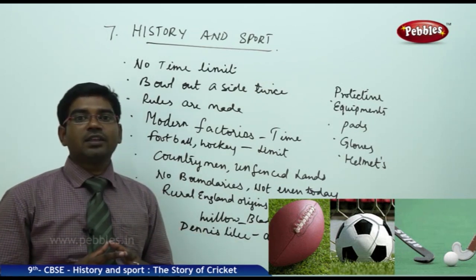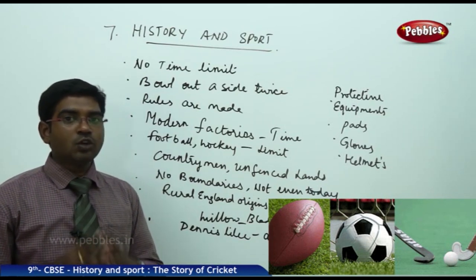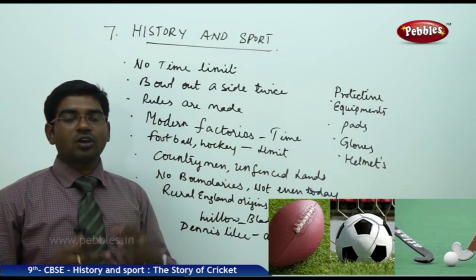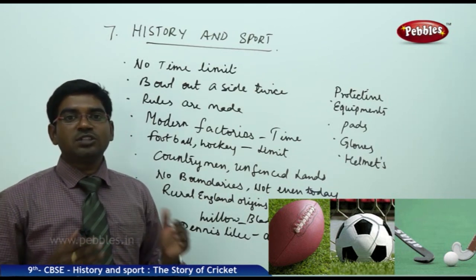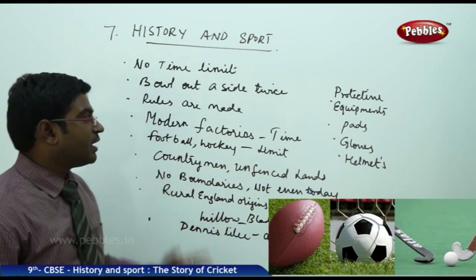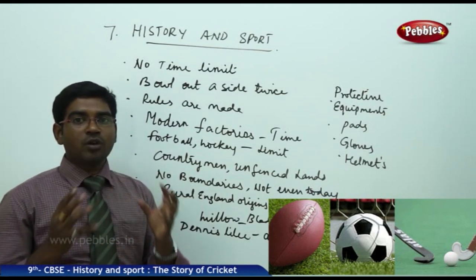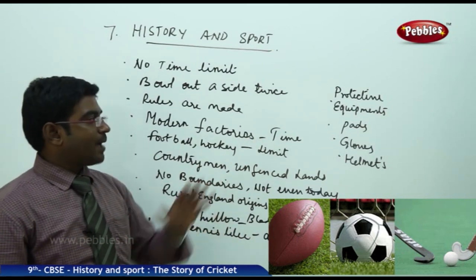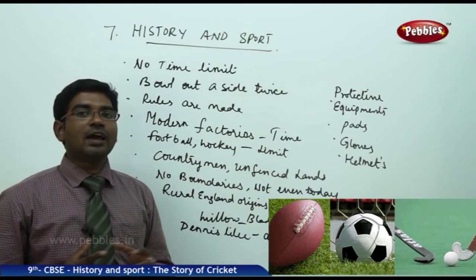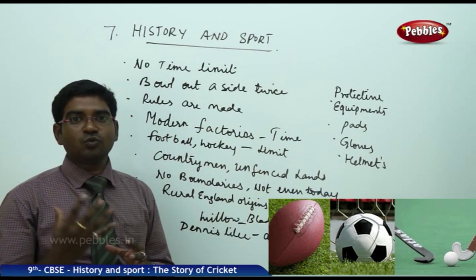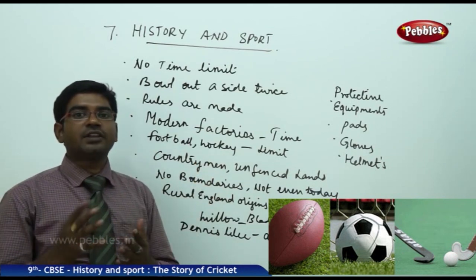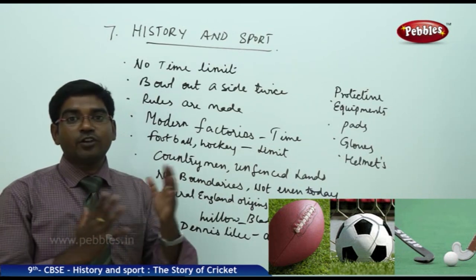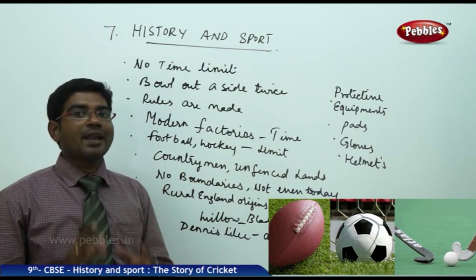Dennis Lillee, the Australian cricketer, once tried to bat with an aluminium bat for an entire innings, just to prove that with modern industrial products one could also play the game. However, the experiment showed it simply did not work. Regarding protective equipment, technology has given advancements in pads filled with wool, soft gloves, fine clothing, and lightweight metal helmets — but these additions apply only to protective equipment, not to the main elements like the bat, ball, stumps, and wickets.